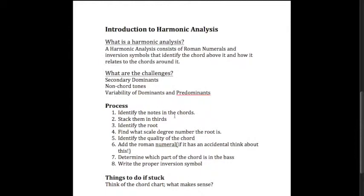Then you add the Roman numeral. If it has an accidental, think about this. Because if it has an accidental, that means it's probably a secondary dominant or some other chord that doesn't follow the normal rule of scale degree number equals Roman numeral number. Then determine which part of the chord is in the bass, and write the proper inversion symbol based on that.